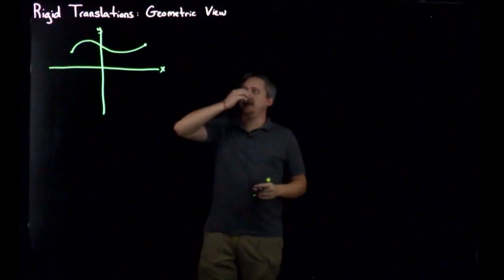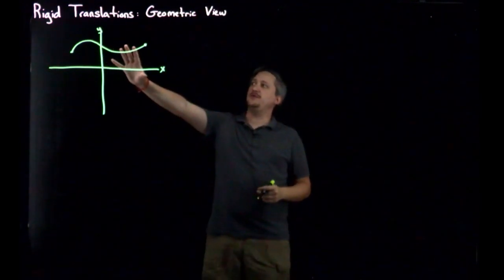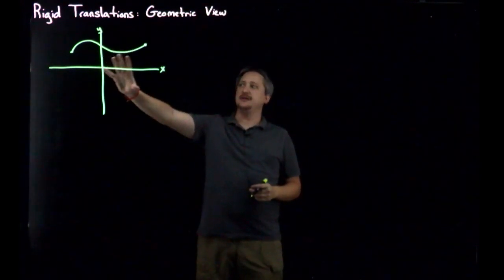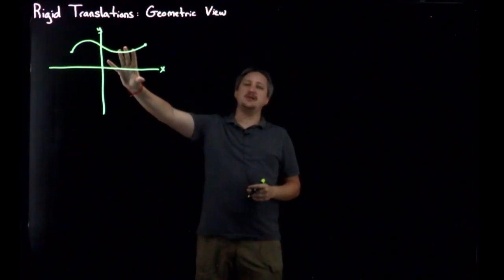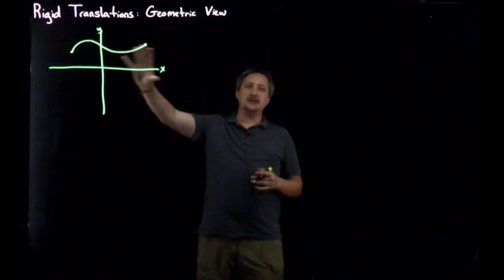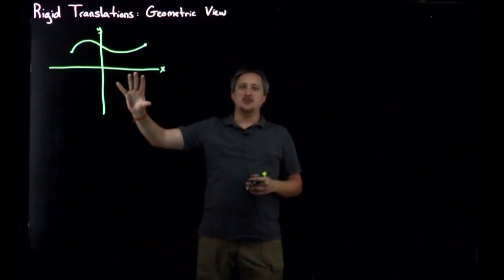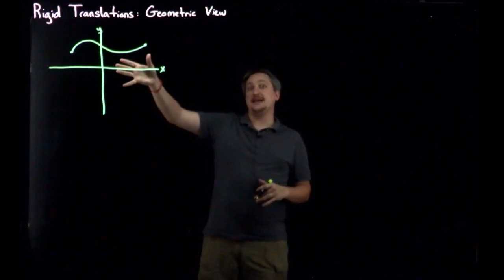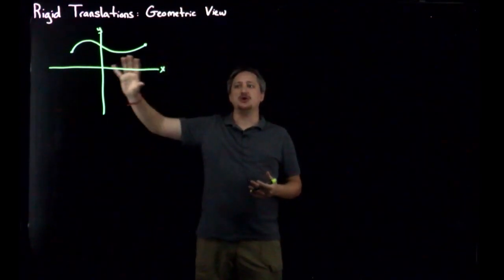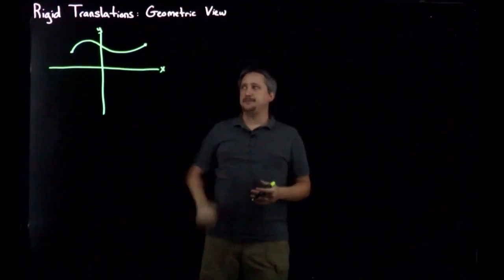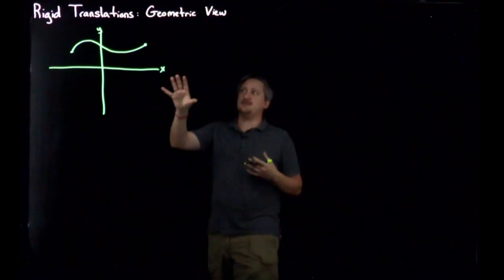So when we say translation, what that means is that we're going to be moving this thing around on the grid, on the xy-axis plane. But specifically, we're going to be moving it either left-right or up-down, so we're going to be moving it horizontally or vertically. What we're not doing is like spinning it, for example. So we just want to go left-right or up and down. So that's what the translation bit is.